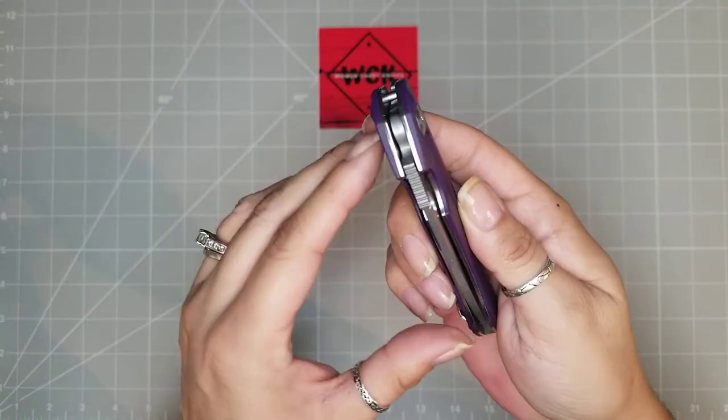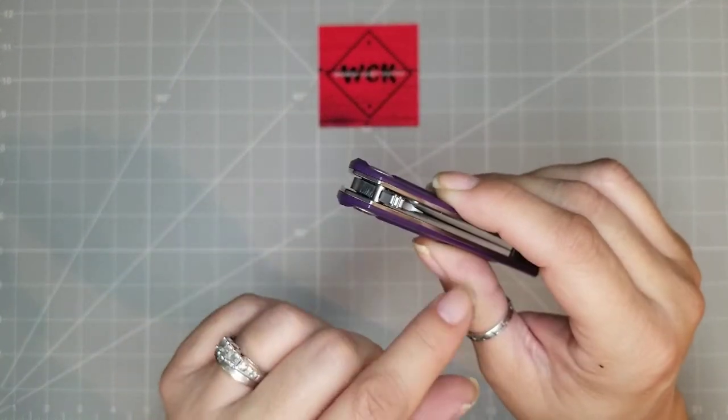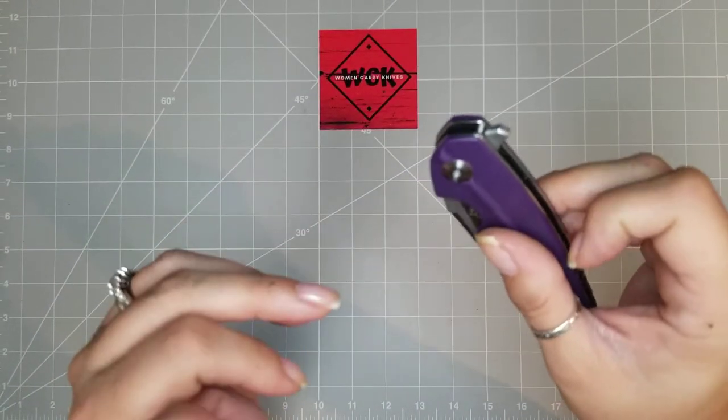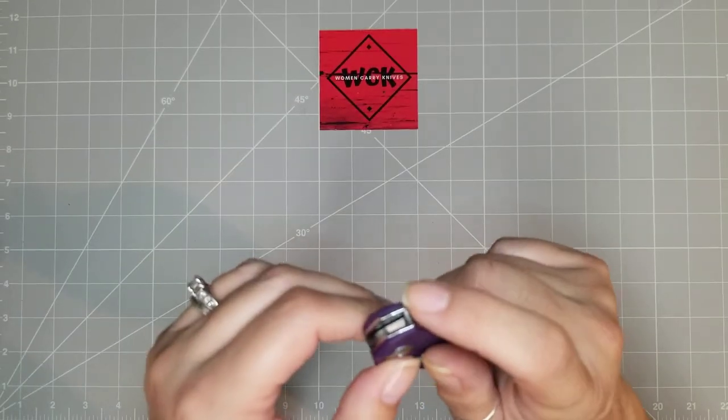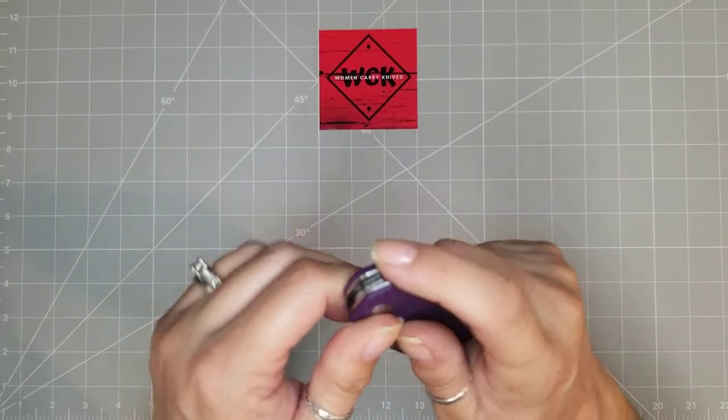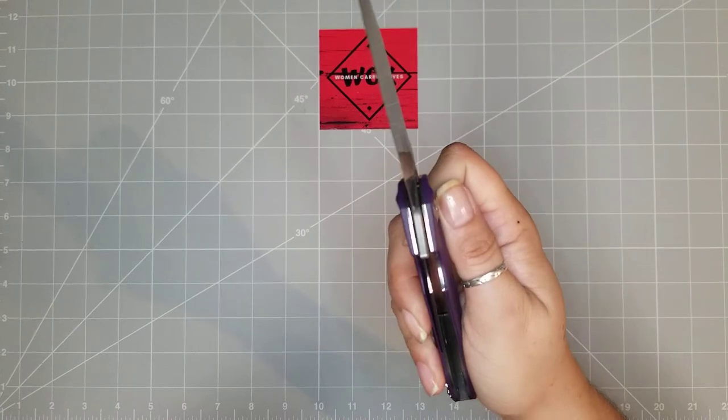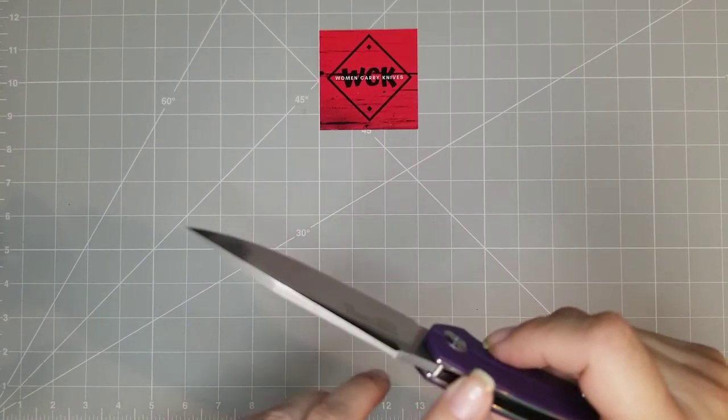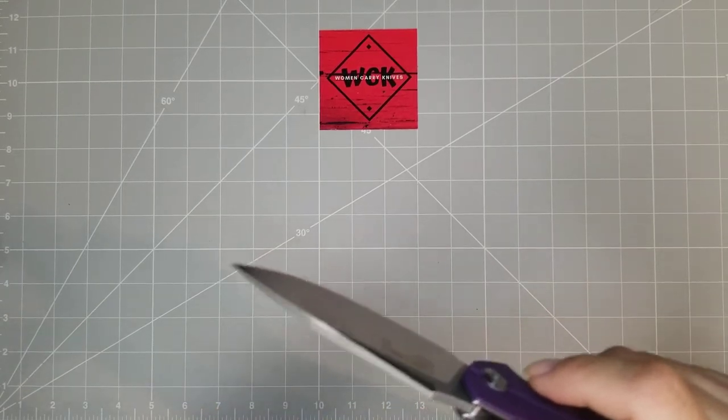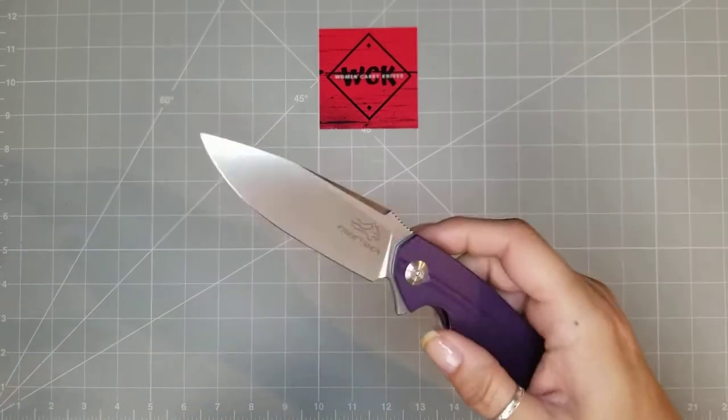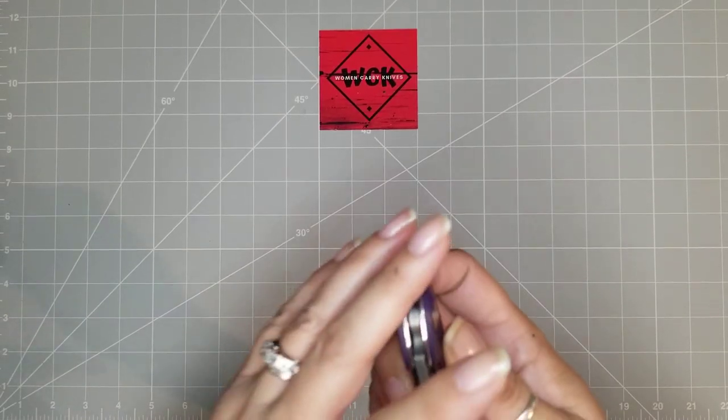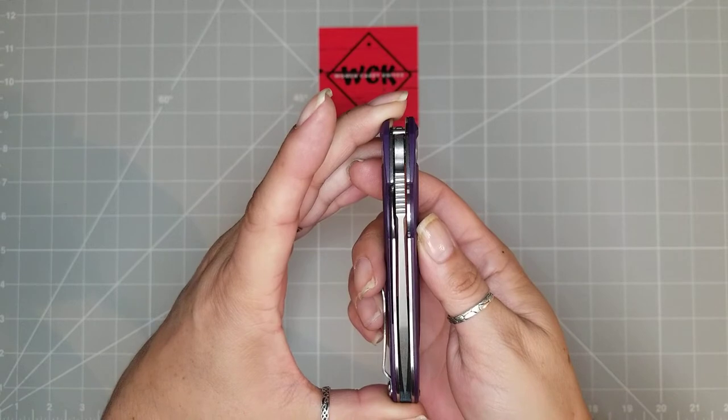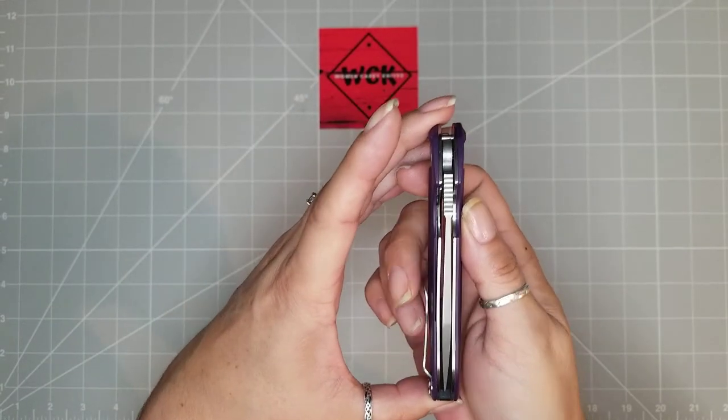It also has jimping on your flipper tab. Now, not all knives do require jimping on the flipper tab. This one, you probably could have gotten away with not having it. But I do love my jimping because if your hands happen to get slippery or whatever, it just makes it so easy to pop on out of there. You also have jimping on the blade spine here. Your blade centering is just perfect. Look at that. It is just perfect.